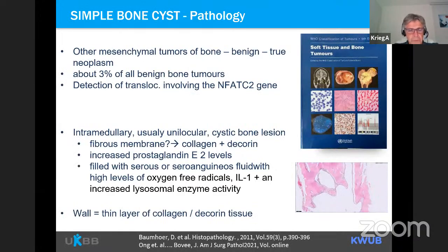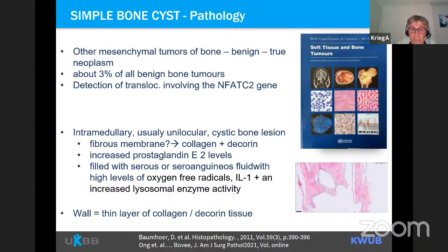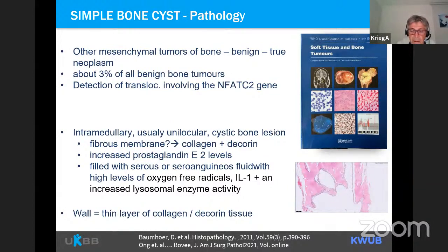Based on the newest WHO bone tumor classification from 2020, simple bone cyst belongs to the group of other mesenchymal tumors of bone — benign — and represents about 3% of all benign bone tumors. All lesions previously listed under tumors of undefined neoplastic nature are now considered true neoplasms, in which recurrent translocations involving the NFATC2 gene have been detected, the significance of which is not yet understood. High levels of oxygen free radicals, interleukin-1, and increased lysosomal enzyme activity have been found in simple bone cysts, which may play a pathological role in bone damage, expanding the cyst and increasing pressure inside.